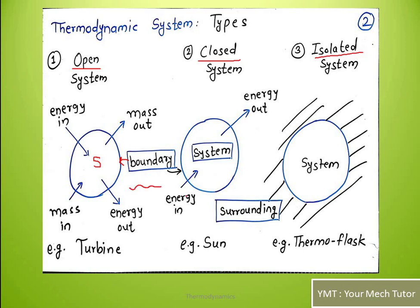In this diagram, a certain quantity of matter is entering the system and leaving it — so mass is entering and mass is leaving. Similarly, some energy is entering the system and some energy is leaving the system. If there is both mass and energy transfer, then the system is called an open system.